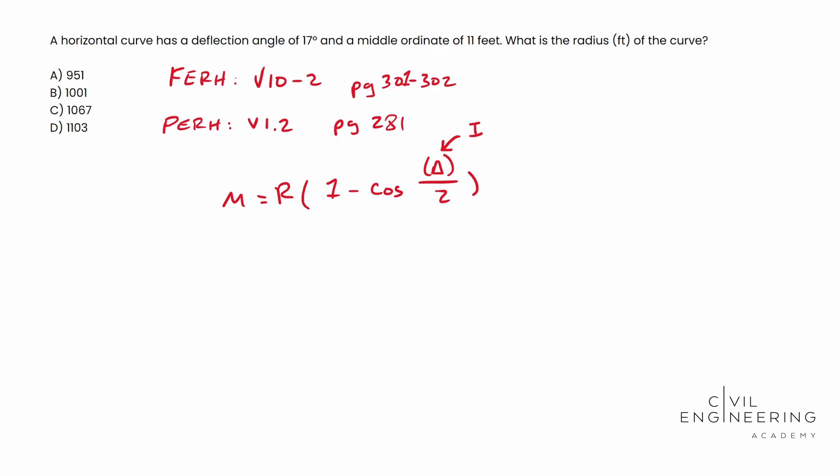And so this is pretty simple, just basic algebra. We're going to divide by this portion right here and bring it over here. All right. And so what we do, we end up with something that looks a little bit like this: R equals the middle ordinate over one minus the cosine of Delta over two. All right. And so that's going to be the formula for that, easy plug and chug right here.